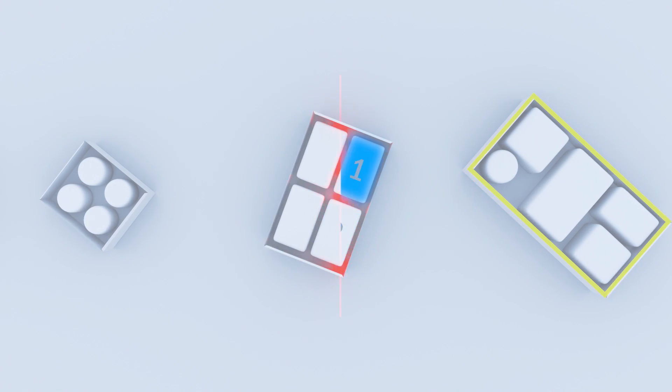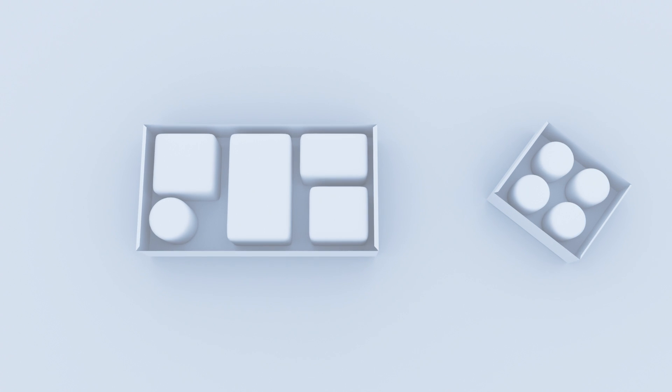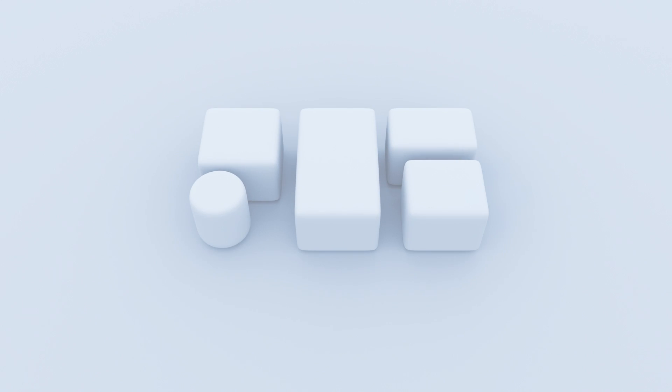It easily finds, counts and positions objects no matter what shape, color or orientation the products come down the line. Area and volume measurement are available as well as intensity data for label detection.